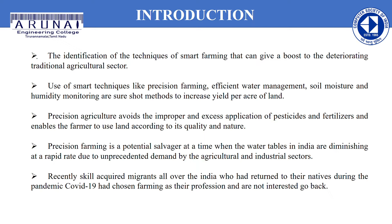The identification of smart farming techniques can give a boost to the deteriorating traditional agriculture sector. Use of smart techniques like precision farming, efficient water management, soil moisture and humidity monitoring are the source methods to increase yield per land. Precision agriculture avoids the improper and excess application of pesticides and fertilizers and enables the farmer to use land according to its quality and nature.